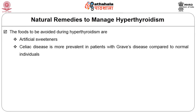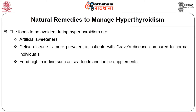Celiac disease is more prevalent in patients with Graves disease compared to normal individuals, and hence gluten or gliadin — a protein present in wheat — containing foods should be avoided. Foods high in iodine, such as sea foods and iodine supplements, should be avoided. Reduce the consumption of dairy products.